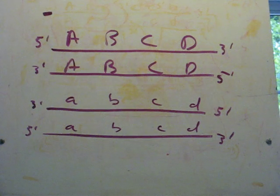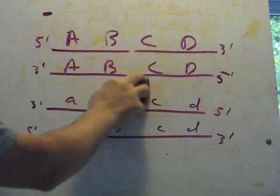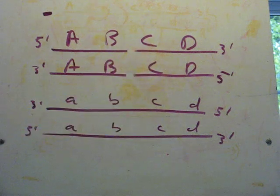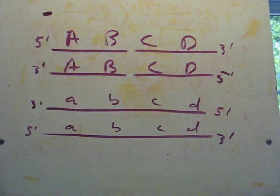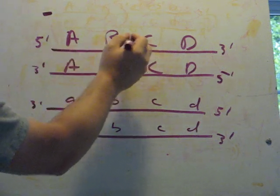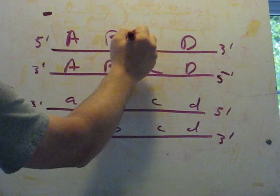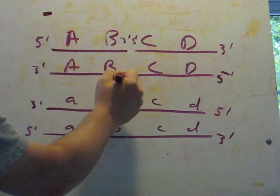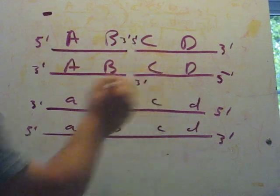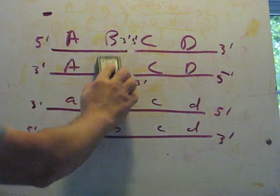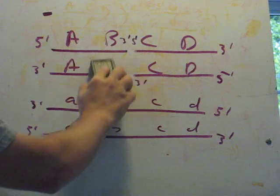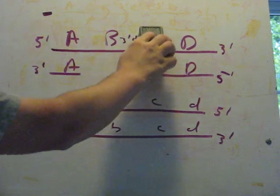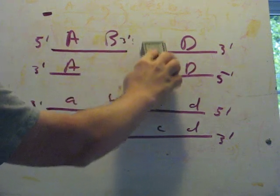The first thing that happens during crossing over is a double-strand break, right there. It's actually induced by an enzyme called SPO11. The next step, keeping our 3 prime and 5 prime ends indicated, is that the 5 prime ends get eaten away around this double-stranded break. The 5 prime end of each side of the double-stranded break gets resected away like this.